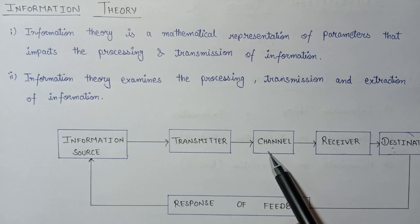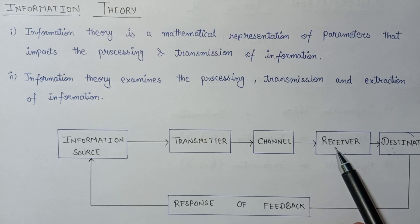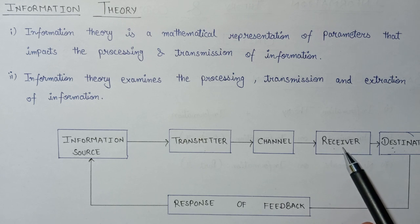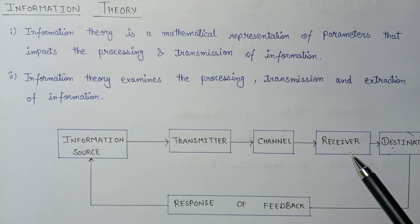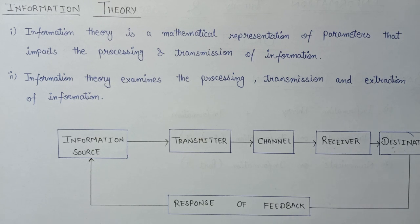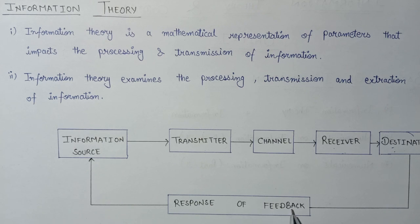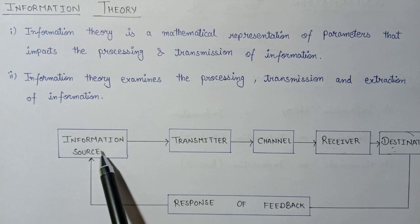A channel here acts as a communication medium between the transmitter as well as the receiver. After that, the channel will transmit this information to the receiver. The receiver receives that information and then transmits it towards the destination. One important aspect is that some part of the information at the destination goes back to the information source in the form of feedback, which is why it is known as a feedback response.